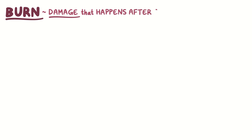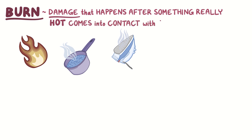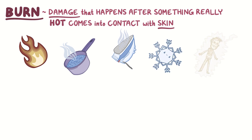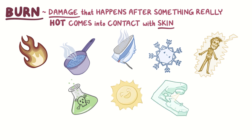A burn is the damage that happens after something really hot, like a fire, hot water or steam, or even a hot object comes into contact with skin. But burn injuries can also be caused by extreme cold, electricity, some chemicals like strong acids, or radiation, like from the sun or medical treatments.